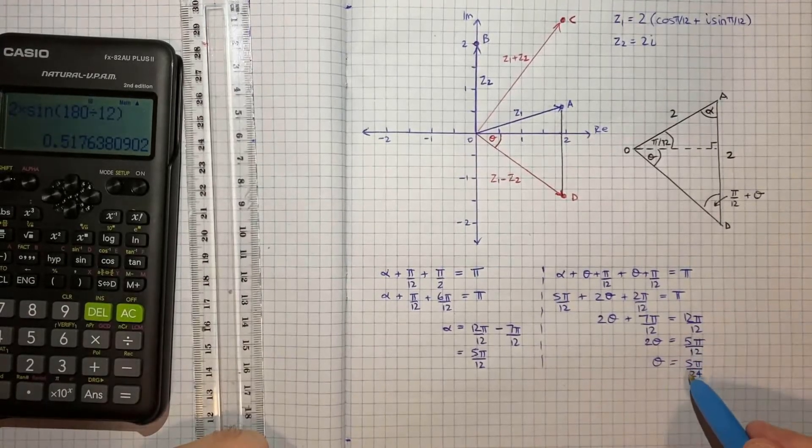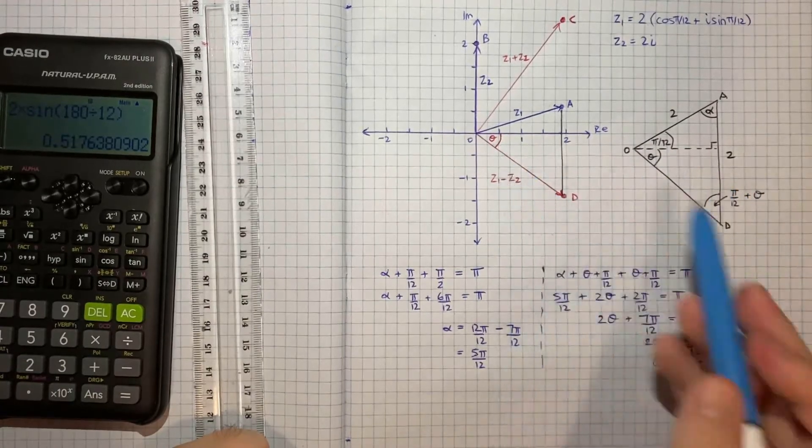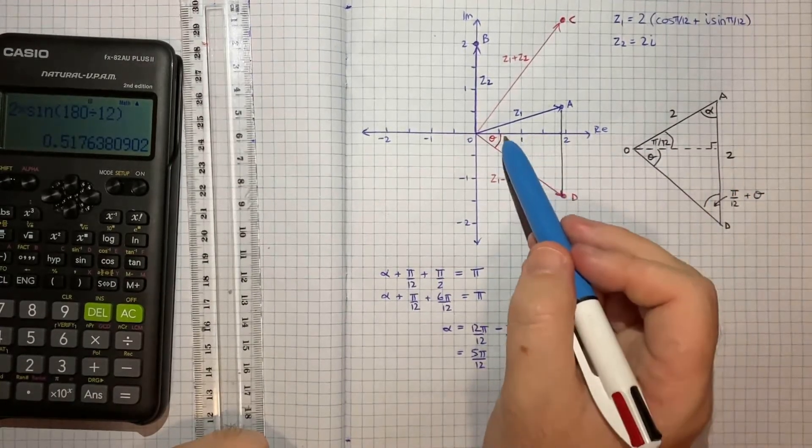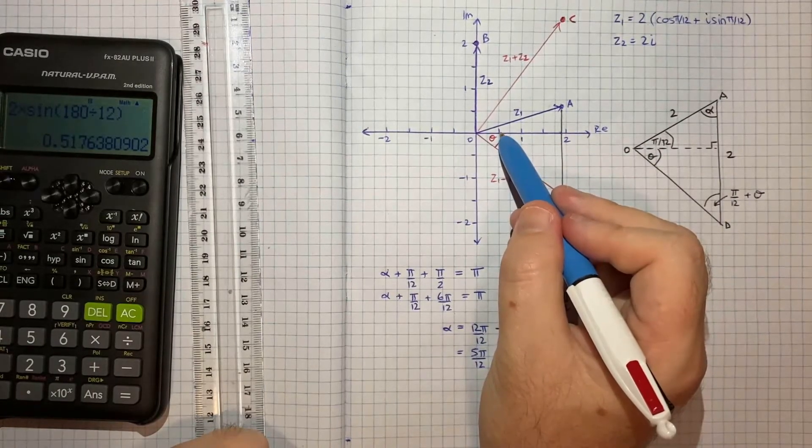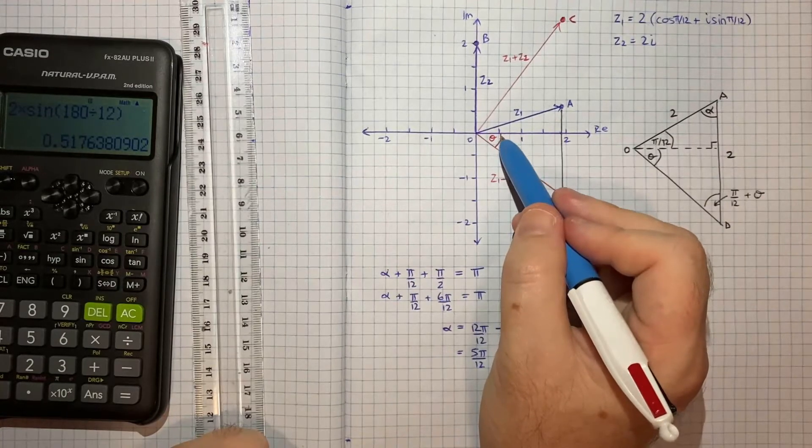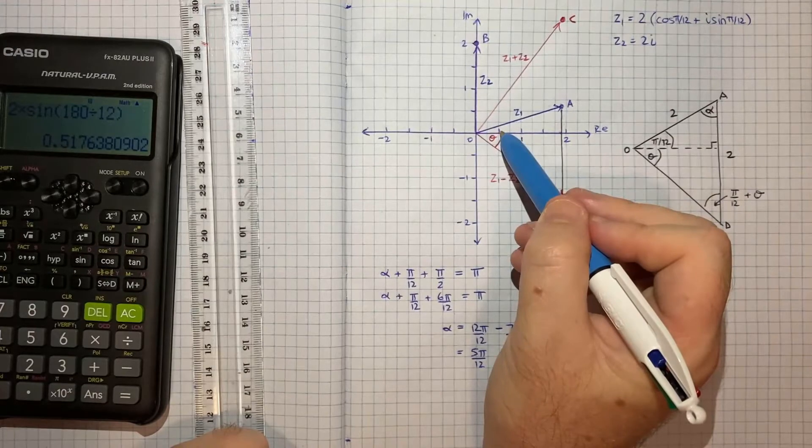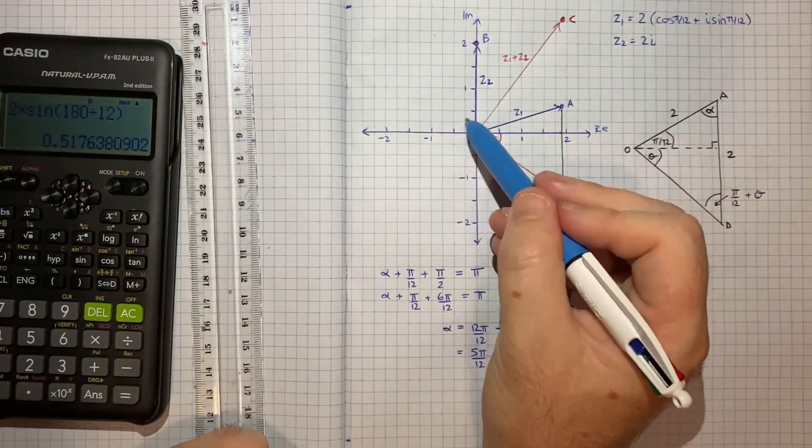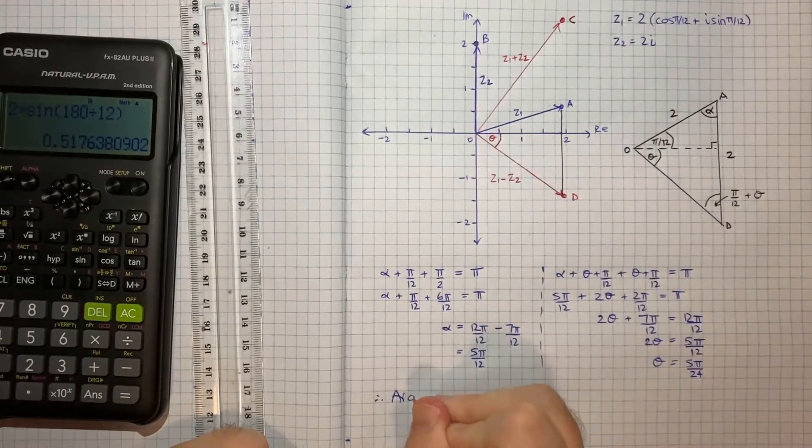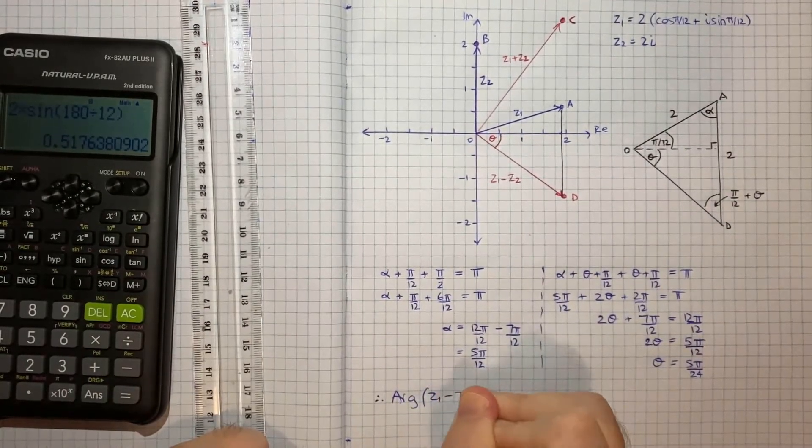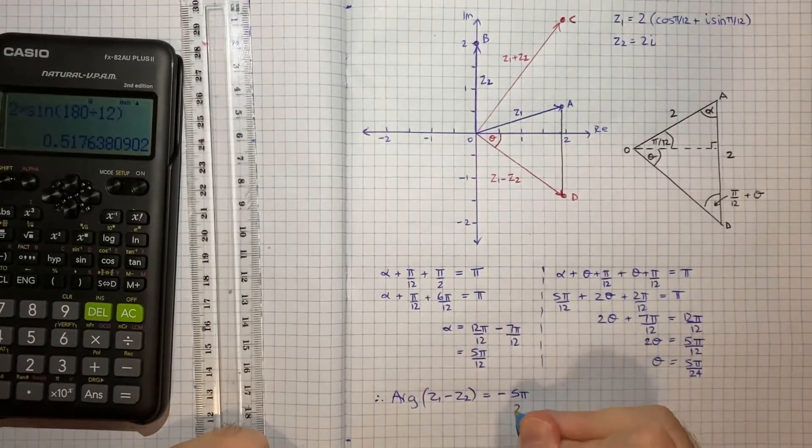So that's the exact magnitude of theta, we were asked to find the exact value of this argument. But we also need to note the direction, because we're coming in this clockwise direction. So normally when reading arguments we kind of go anti-clockwise, that would be a positive argument. So if we're going in the other direction it will be negative. So therefore we can say that the argument of z1 minus z2 is equal to negative 5 pi on 24.